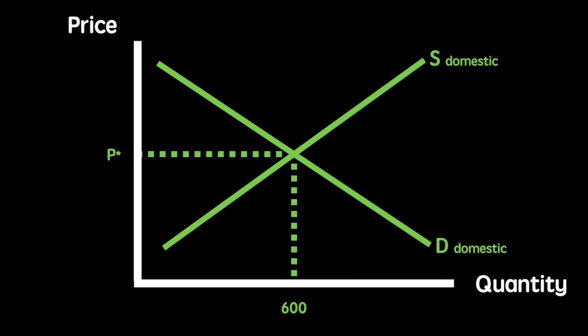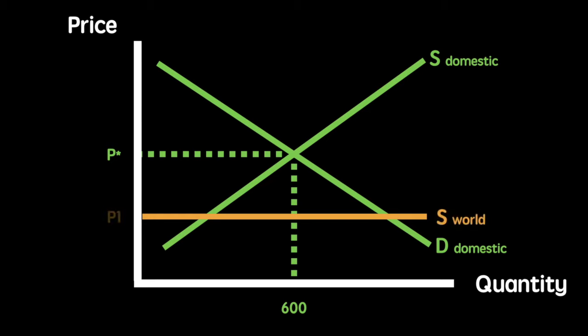We'll examine the diagram for the quota next. Starting again with the previous diagram and making a few changes — keeping the world supply in — domestic supply will account for 250 units and world supply will account for an additional 650 units, bringing total quantity supplied to 900.